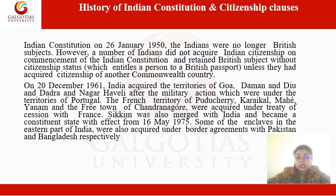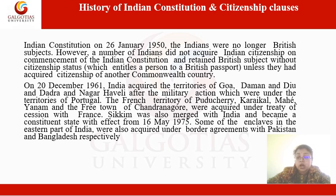At that time, India was a nascent state — it had just come into existence and was not having any legislation regarding citizenship policies. So in the absence of any such legislation, the Indian Constitution had to have certain clauses by virtue of which Indians would be given citizenship. That is why Chapter Two, the citizenship chapter, was introduced in the Indian Constitution, and that is how Articles 5 to 11 are the set of articles by virtue of which Indians were given citizenship at the commencement of the Indian Constitution.